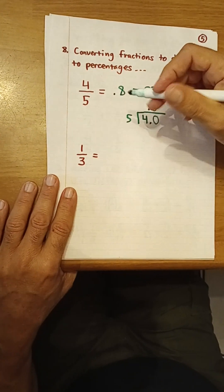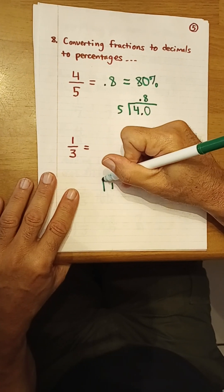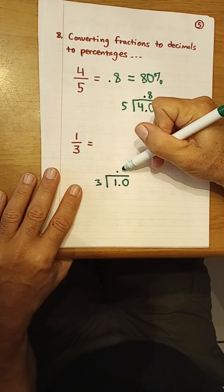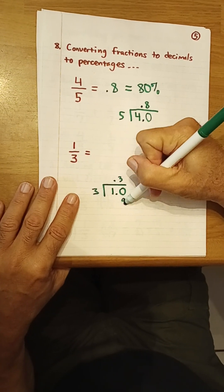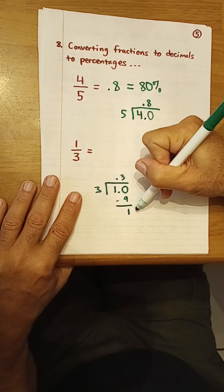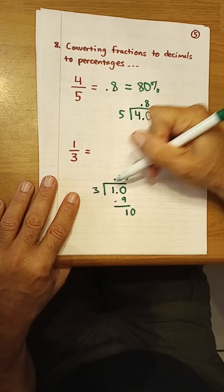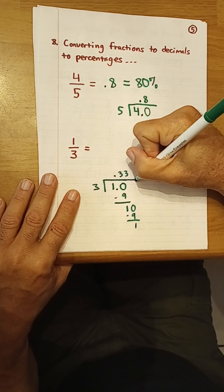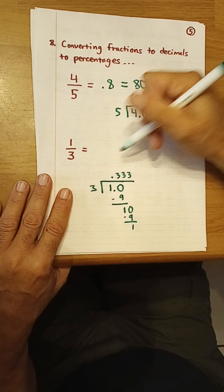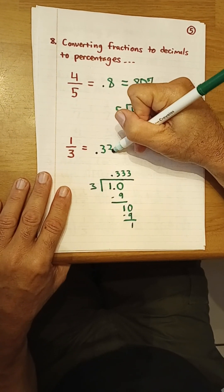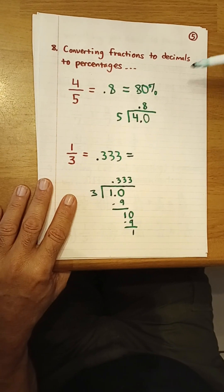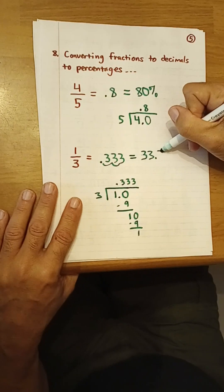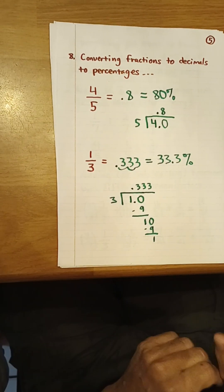Let's try 1/3. We divide 1 by 3. 3 goes into 10 three times; 3 times 3 is 9; 10 minus 9 is 1 — bring down a zero, and it just repeats. So it's 0.333 repeating. Moving the decimal two places to the right gives 33.3%. So that's it for today for fractions.